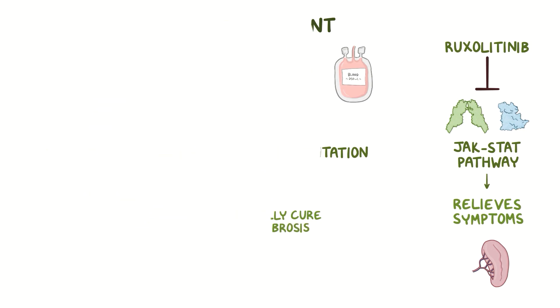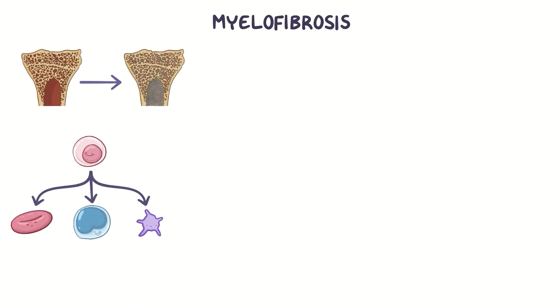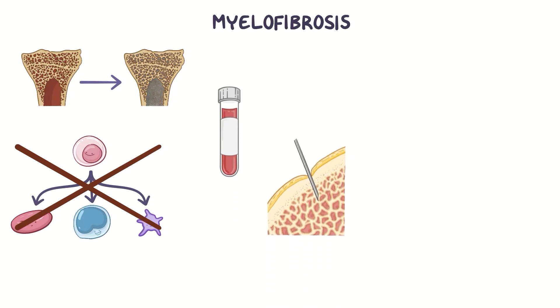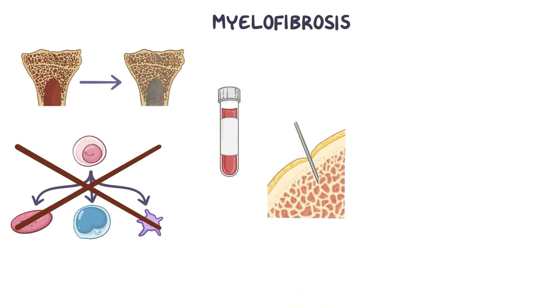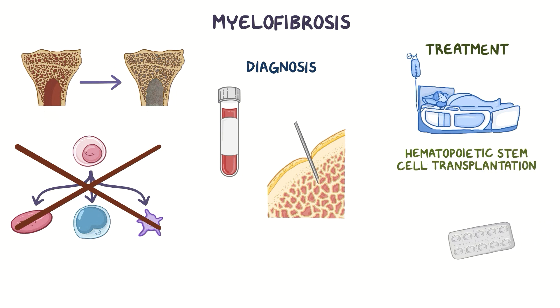As a quick recap: myelofibrosis is a rare bone marrow disorder where the bone marrow tissue is replaced with fibrotic tissue, and that interferes with blood cell production. Blood tests and bone marrow biopsy are crucial for diagnosis. It can be treated with hematopoietic stem cell transplantation and ruxolitinib.